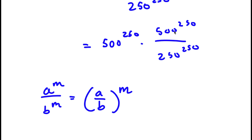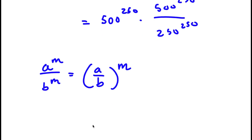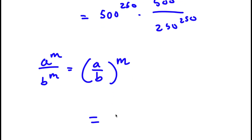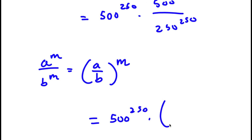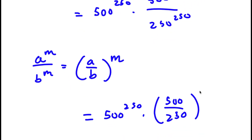So in this case, 500 to the power of 250 over 250 to the power of 250 can be rewritten as 500 over 250 to the power of 250.